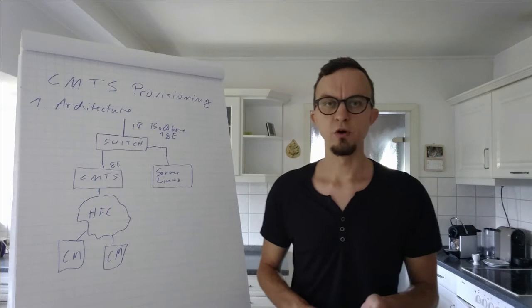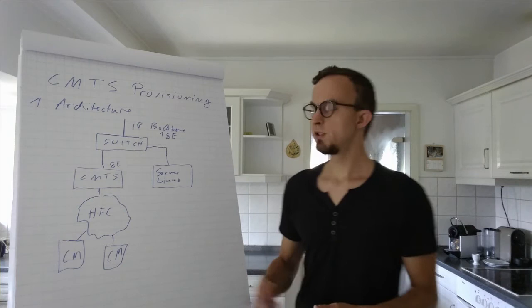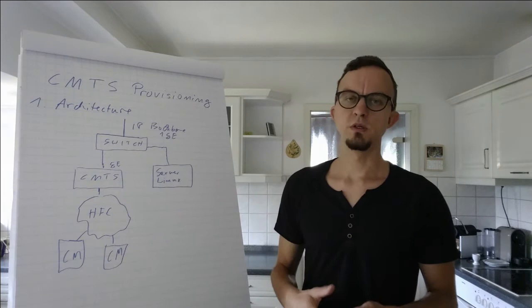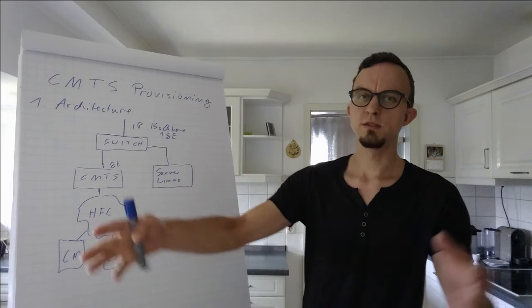Of course, when networks are getting bigger, we provide not just one switch. For example, here we have a cloud of many switches deployed over our network. These switches may also be connected with fiber in between, and then we have our CMTSs deployed more widely on the network.